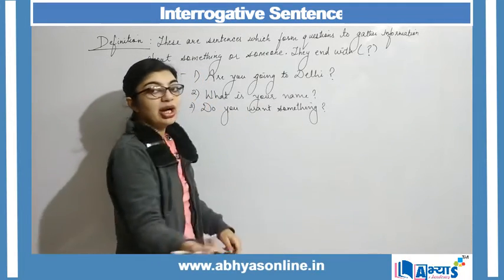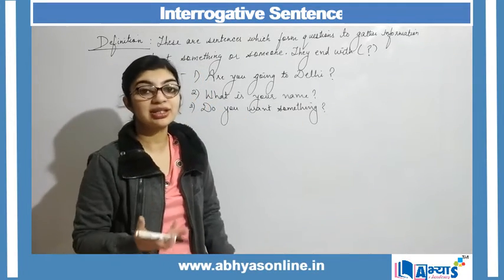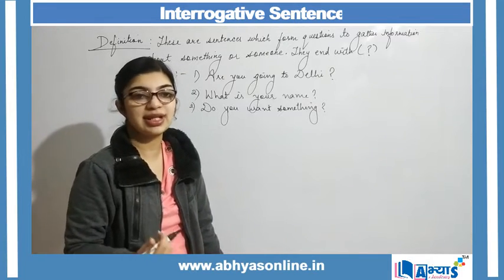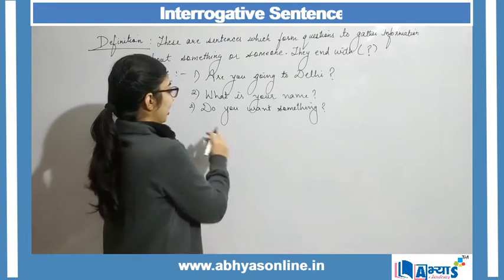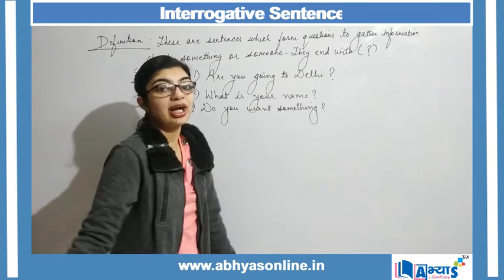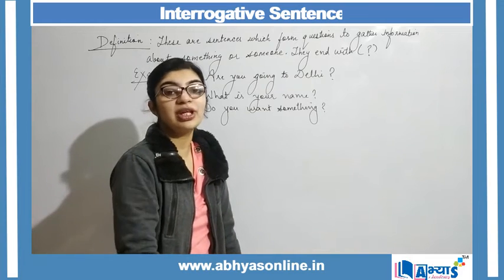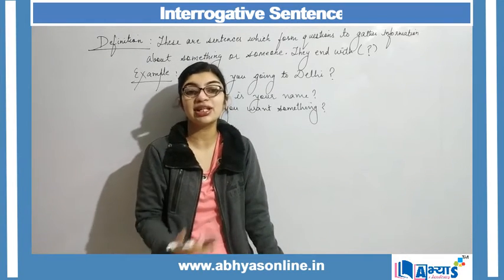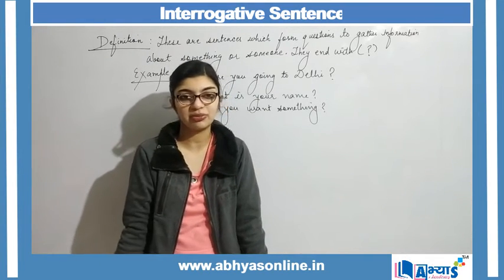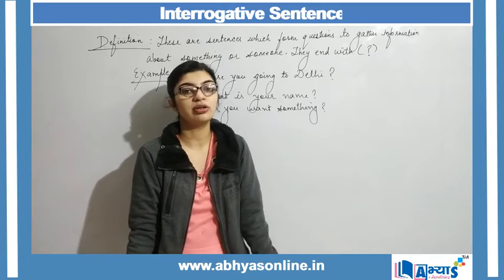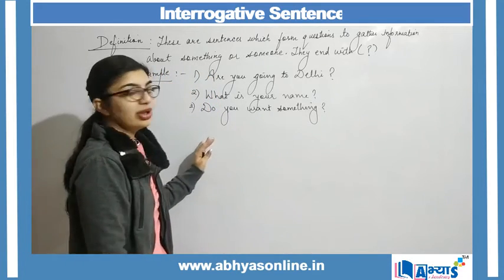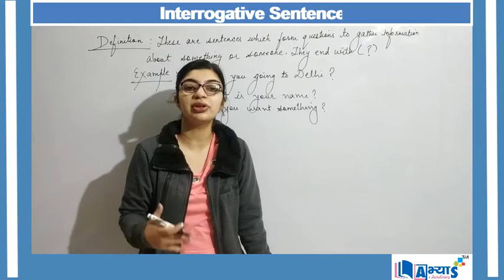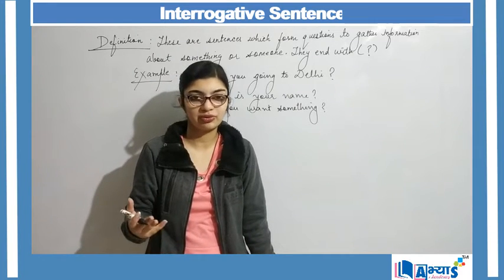'What is your name?' — again I am asking the question because I am curious to know the person's name. Next is 'Do you want something?' — again I want to make sure if the person is comfortable or if the person needs something from me or not. So interrogative questions can be of different types.